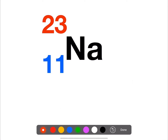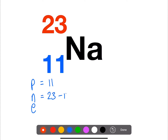Here's a really quick example. We have sodium and we need to calculate the number of protons, neutrons, and electrons. Protons is equal to the atomic number, which is 11. Neutrons is always mass number minus atomic number, so it's 12. And electrons is always the atomic number minus the charge — in which case we have no charge, so it's 11.